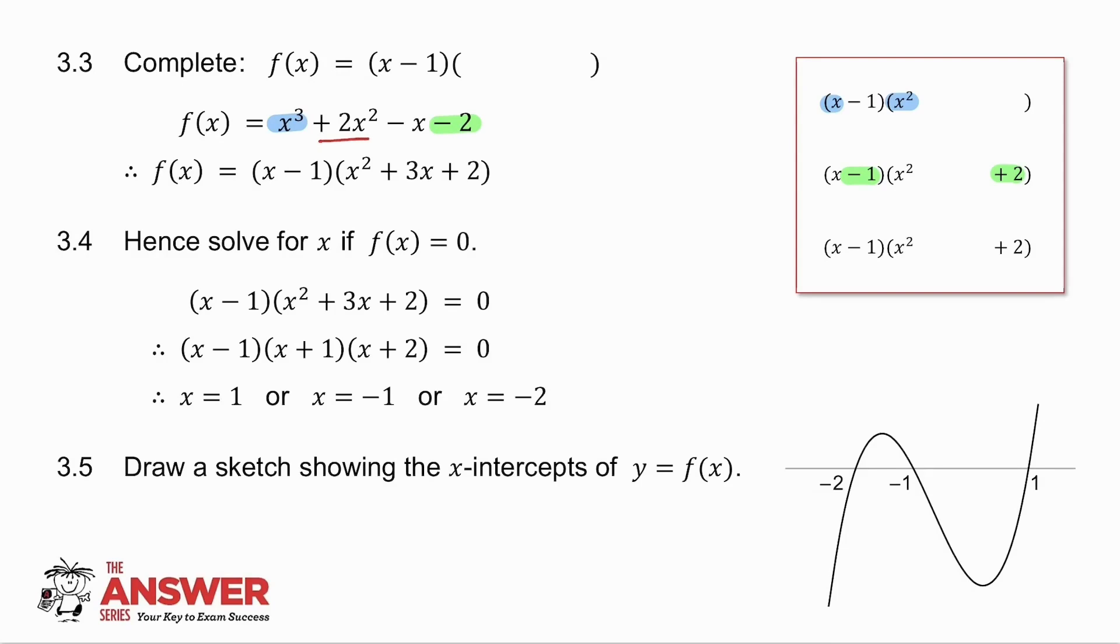I then need to get a plus 2x squared. There I've got a minus x squared. What else do I need to get a plus 2x squared? I need a plus 3x squared, because minus x squared plus 3x squared will give me plus 2x squared. So in the middle I need a plus 3x. Then I check: x times plus 2 is plus 2x, minus 1 times plus 3x is minus 3x. Plus 2x minus 3x is minus x. So there I get x squared plus 3x plus 2.